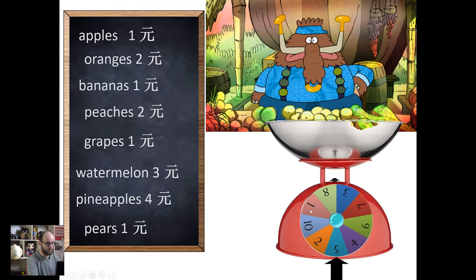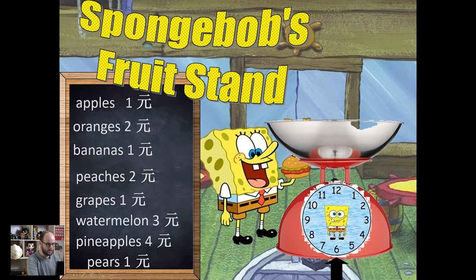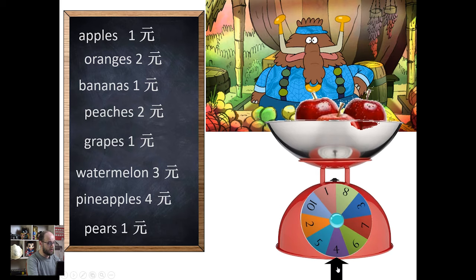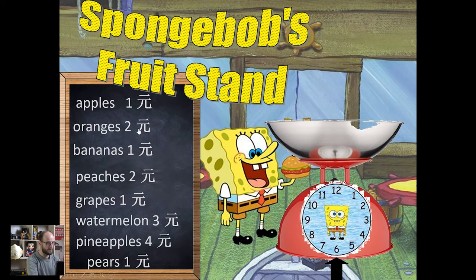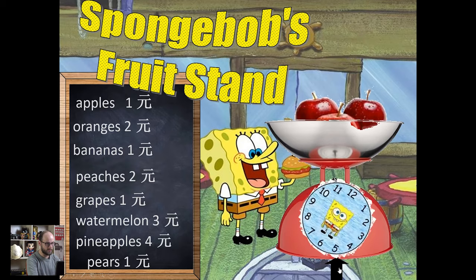The final slide is a fruit shop that you can use to play shopkeeper. You click the apples and it drops the apples in — 'How many apples would you like?' You can use the little spin wheel by clicking the arrow to decide how many. 'I'd like four apples please.' There's also a SpongeBob SquarePants reskin of the fruit shop as a final variation.